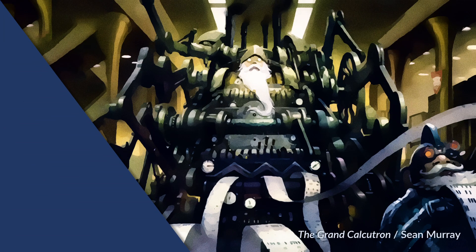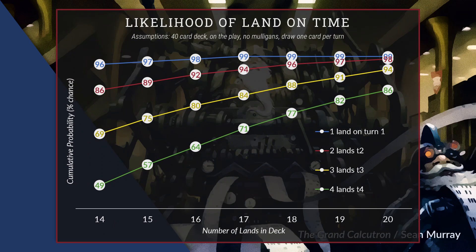We can run hypergeo calculations to determine the likelihood of hitting land drops using different land counts. Consider an aggressive cube deck whose curve stops at 4 — this deck is much more worried about flooding than about getting its third land on time. With 17 lands, we have an 84% chance to see at least 3 lands by turn 3, but we might see 4 or 5, which our aggro deck does not want. If we drop our land count to 14, we hit an 86% probability to see at least 2 lands by turn 2, while reducing our chance of finding 3 or more by turn 3 to 69%.